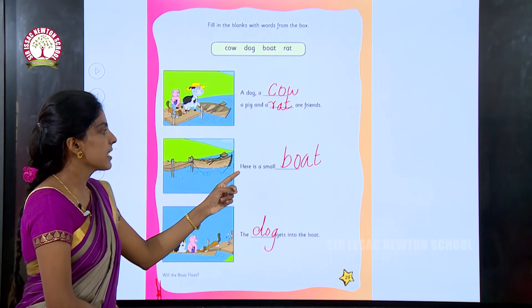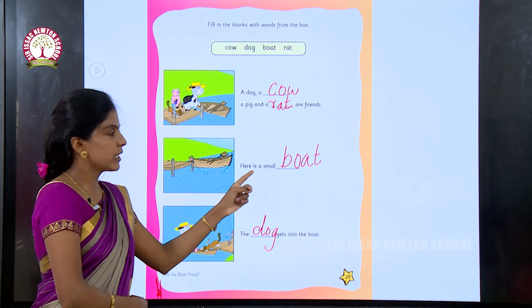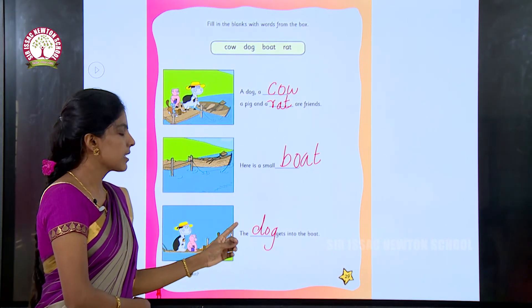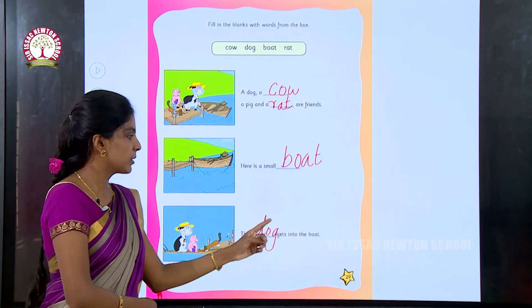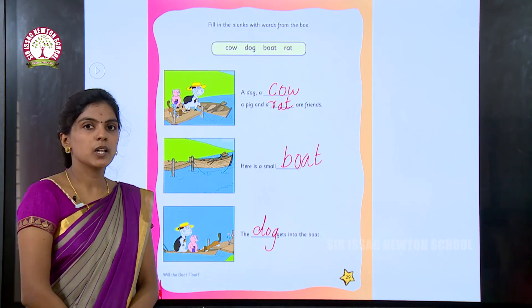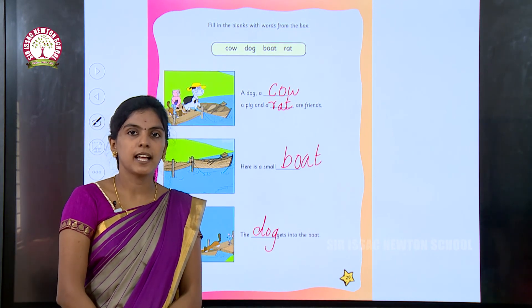The second sentence is here is a small boat. Here is a small boat. And the third one is the dog gets into the boat. The dog gets into the boat. Recall the exercise at your home children. Thank you.